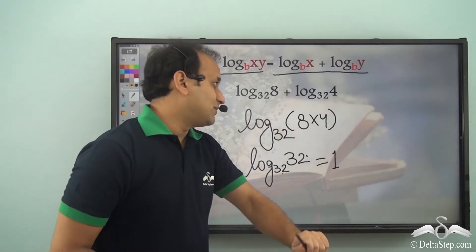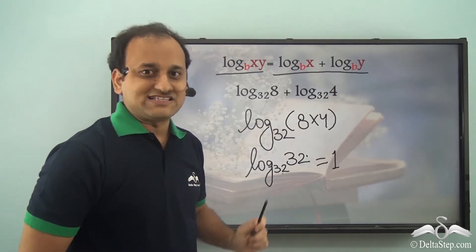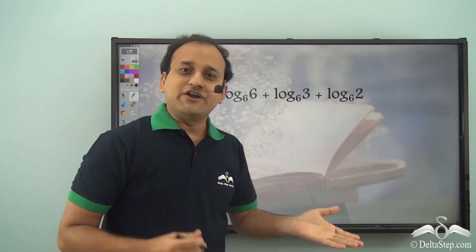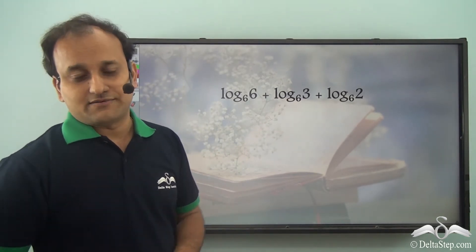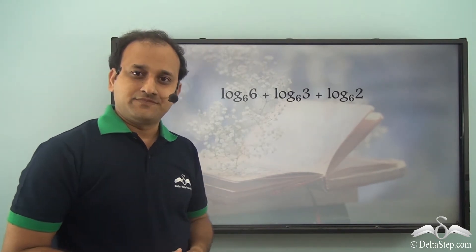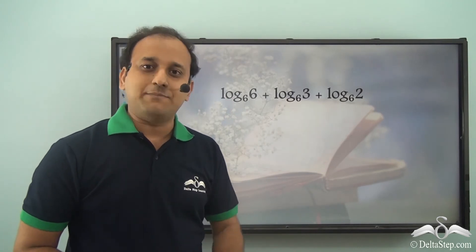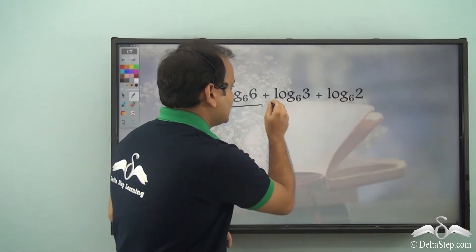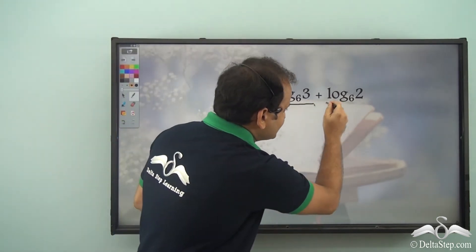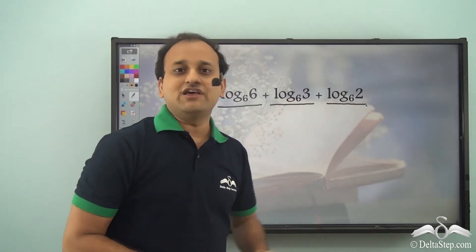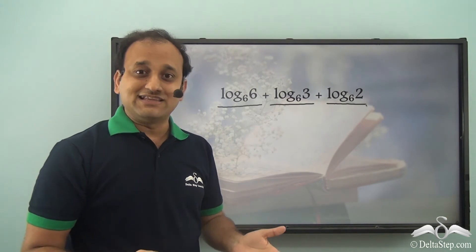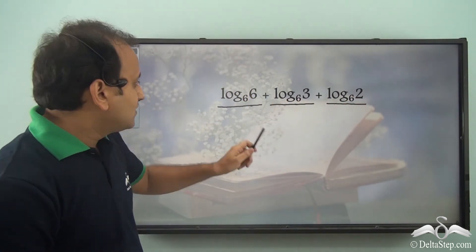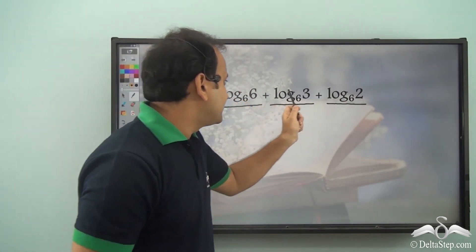This complex problem was solved with the product law, giving a final speed of 1. Sam was happy, but then received new data about earthquakes on Mars. Three earthquakes occurred that day with energy levels log 6 to the base 6, log 3 to the base 6, and log 2 to the base 6. He needed to report the total energy level, meaning he had to add all three — and all three share the same base with different arguments.